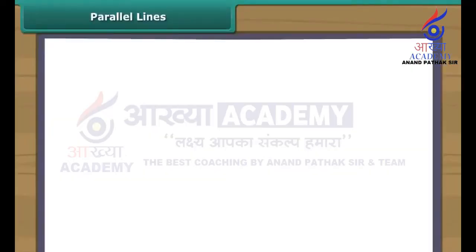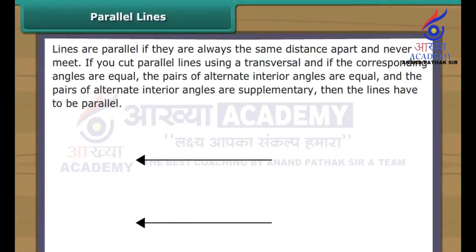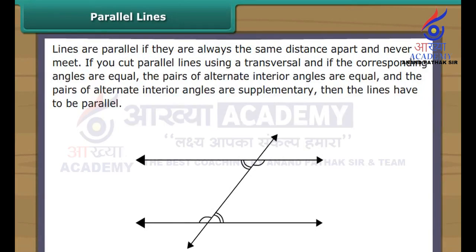Parallel lines are lines that are always the same distance apart and never meet. You can also check if lines are parallel by cutting the lines using a transversal. If the corresponding angles are equal, the pairs of alternate interior angles are equal, and the pairs of alternate interior angles are supplementary, then the lines have to be parallel.